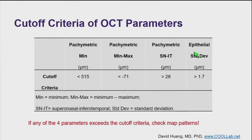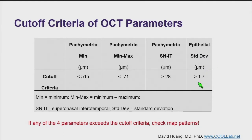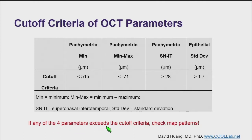And if there's irregular epithelial thickness with a standard deviation of more than 1.7 microns, that also makes keratoconus possible. If any of these four parameters exceeds the cutoff listed, I would then check the map pattern.